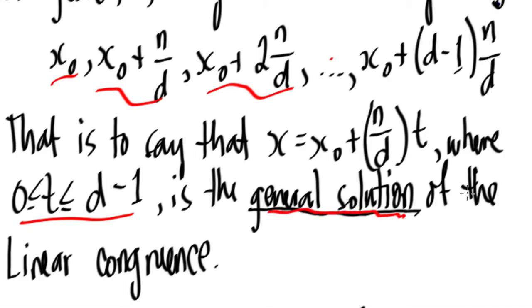This is what we call the general solution of the linear congruence. So this equation here, x = x₀ + (n/d)t where t can be any number from 0 up until d-1, is what we call the general solution. This is the main effect of Theorem 3.6.